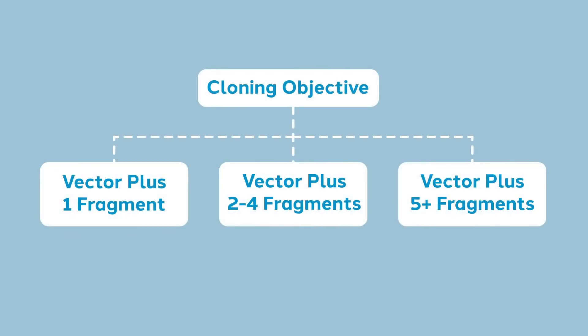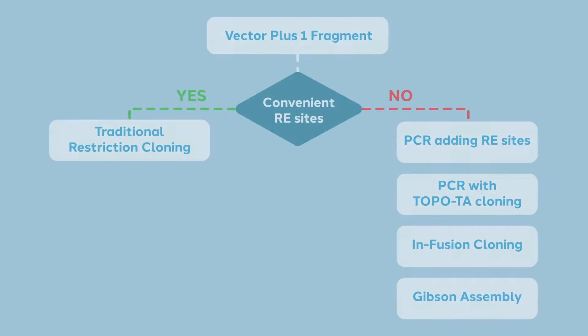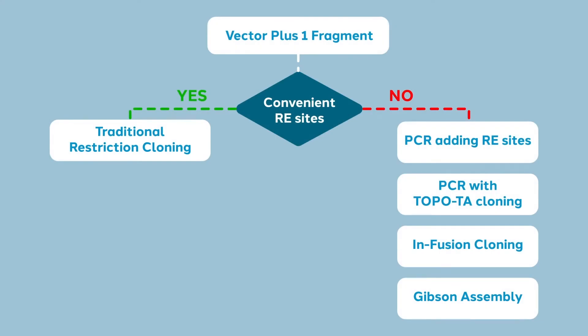Let's now talk about how to decide among the cloning techniques. For this discussion, we will refer to the following decision tree. We will group cloning objectives by complexity, then consider the various approaches that might apply. Let's consider an example of a single step cloning problem. You have a source for your fragment and simply want to move it into a different vector.